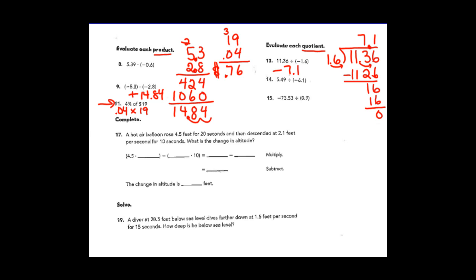Let's do number fifteen — just one more. Seventy-three and 53 hundredths divided by nine tenths. There is one negative in this quotient, so I know my answer is going to be negative. Divided by nine tenths — zero and nine tenths — so again I'm going to move my decimal over to make the divisor the whole number nine, then move it over one place in my dividend and put the decimal up into my quotient. Does nine go into seven? No.